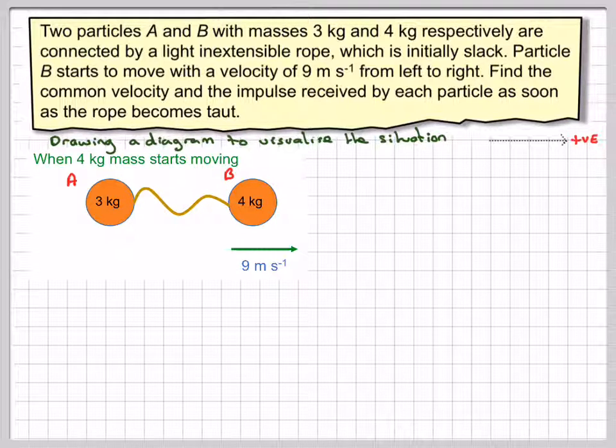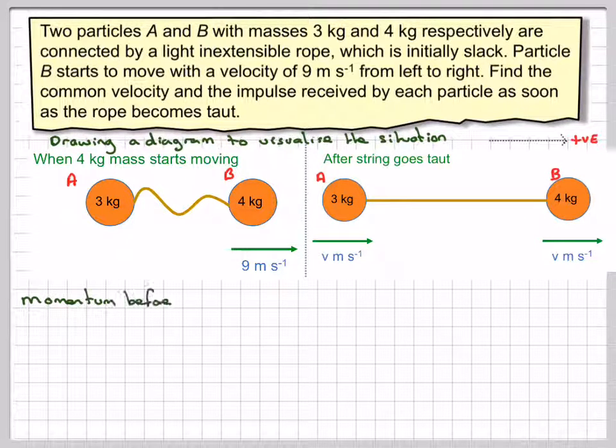This is going to start moving with a velocity of 9 m per second, and this is when the string has become taut. What we've got to calculate is V, which they're both moving up.